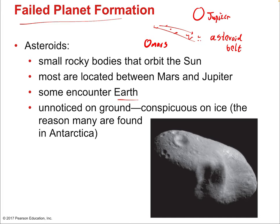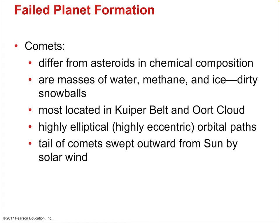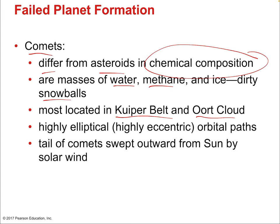Asteroids are unnoticed on the ground but conspicuous on ice — which is why many are found in Antarctica. Comets differ from asteroids in their chemical composition. They are mostly water and other hydrogen compounds like methane and ammonia — like dirty snowballs with some heavier elements. They're mostly located in the Kuiper Belt — the same region as Pluto — and the Oort Cloud, which is about 50 times farther from the sun than the Kuiper Belt. Comets have highly elliptical orbits and develop tails when they get near the sun, as their surface begins to evaporate.